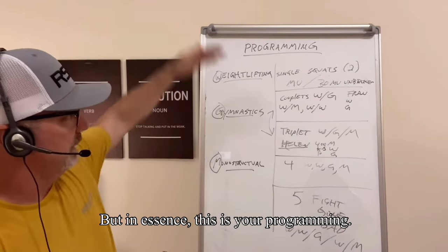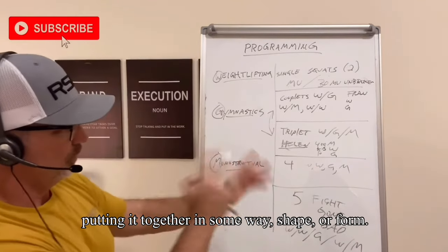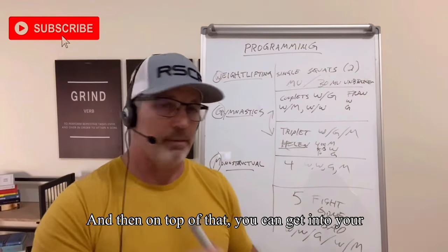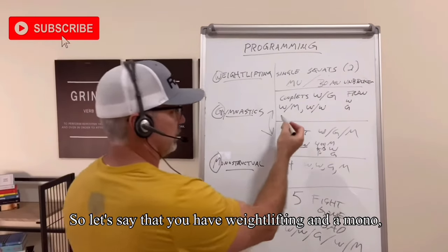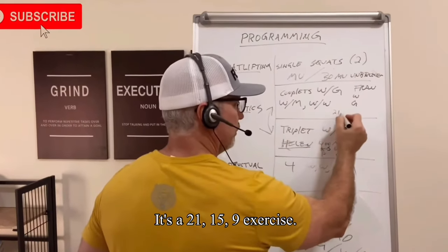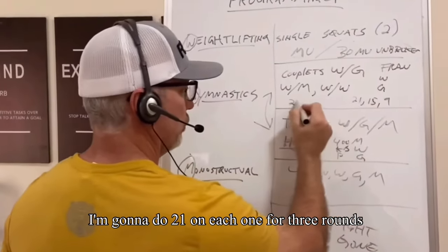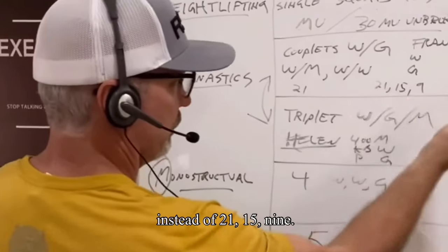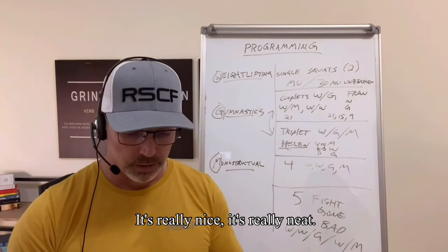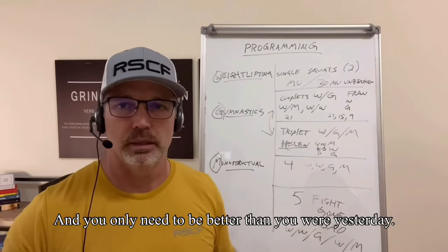In essence, this is your programming. You're taking a weightlifting, a gymnastic move, and a monostructural movement and putting it together in some way, shape, or form — like a puzzle. On top of that, you can get into your numbering scheme. For example, FRAN is a 21-15-9 exercise, but you could change it to 21-21-21 for three rounds instead. You can change it up any way you want. The neat thing about CrossFit is that you're always pushing yourself and getting better — you only need to be better than you were yesterday.